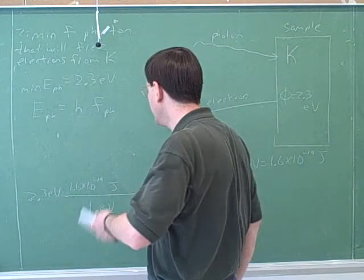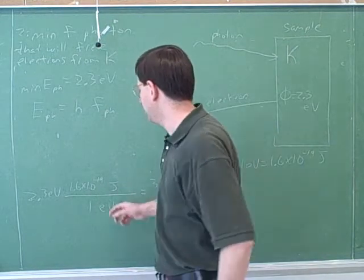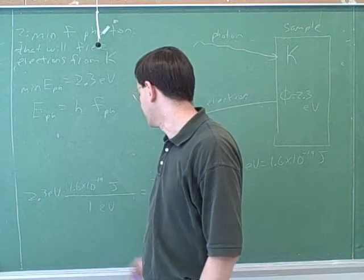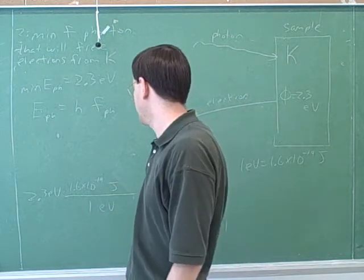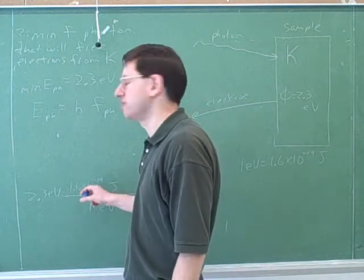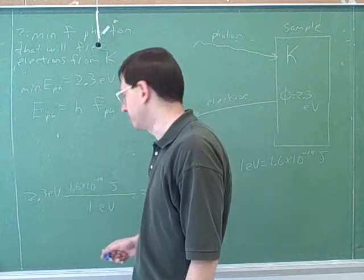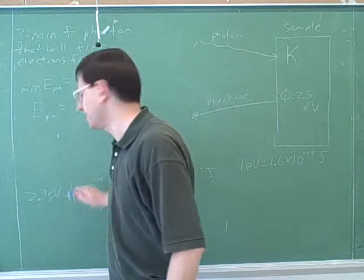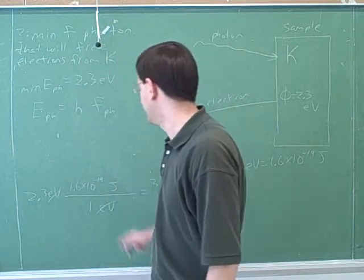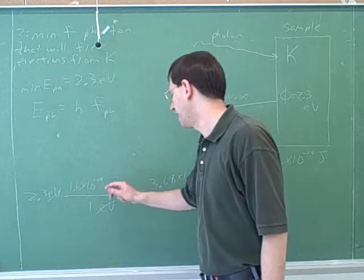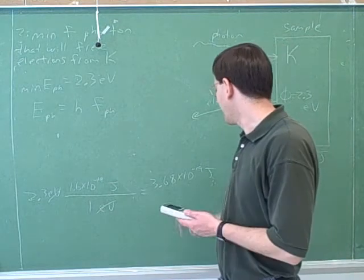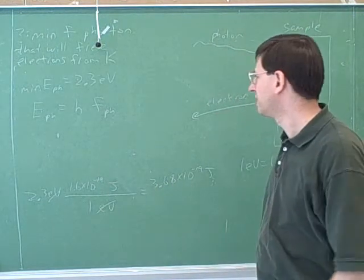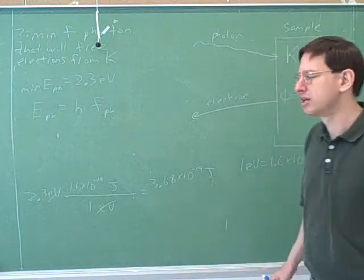It's good that you didn't do the unit conversion in your head but wrote it down as a formal unit conversion, because otherwise it's easy to multiply when you should divide or divide when you should multiply. We use this conversion ratio to cancel out the electron volts, and that tells us that we should be multiplying here — that puts us in joules.